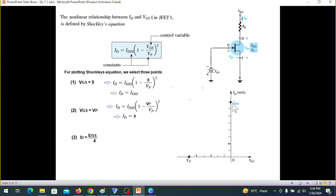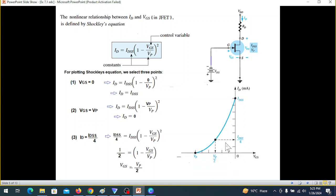We can connect it directly like we do the load line, but since this is not linear we need at least one more point to draw it accurately. For this we put ID equal to IDSS divided by 4, and solving you can find VGS equals VP by 2. So when VGS is VP by 2, we'll have ID equal to IDSS/4. Now we have three points and can easily plot the transconductance curve.